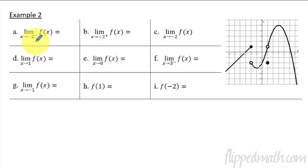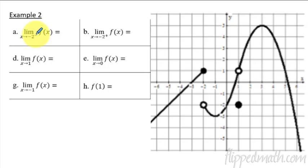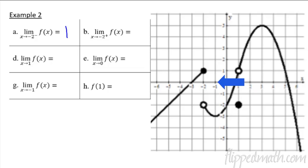We're going to approach negative 2 from the left side. Looking at the graph, we follow the graph from the left side of negative 2, and it's approaching a y value of 1. Next, we approach negative 2 from the positive side — in other words, the right side. We're coming back towards negative 2 from the right, and following the graph, it is approaching a y value of negative 2.